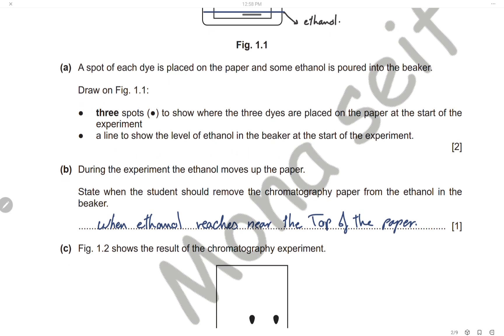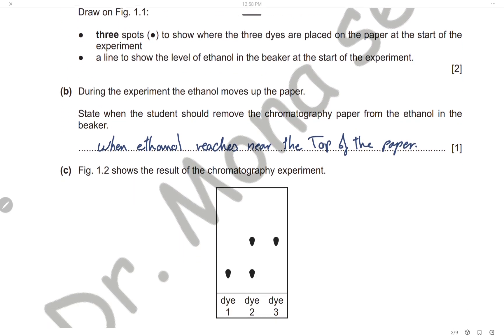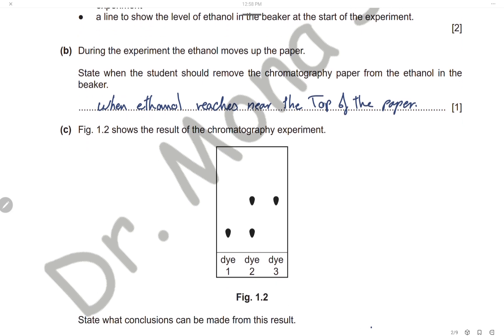During the experiment, the ethanol moves up the paper. We should remove the paper when the ethanol reaches near the top of the paper.